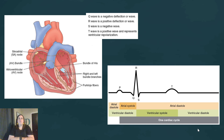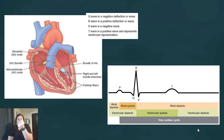The AV node sends the signal down the AV bundle, which runs through the septum between the two ventricles. This branches into the right and left bundle branches, which travel to the apex — the very tip of the heart — and then come back up through small fibers called Purkinje fibers. The electrical signal then tells the ventricles to contract from the bottom up, forcing blood to the lungs or to the rest of the body.